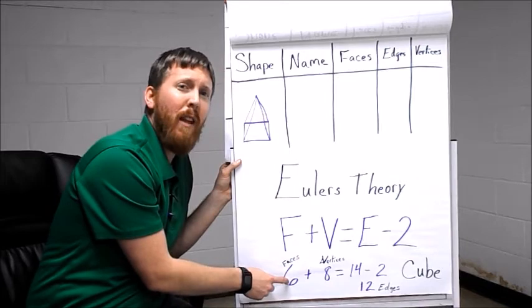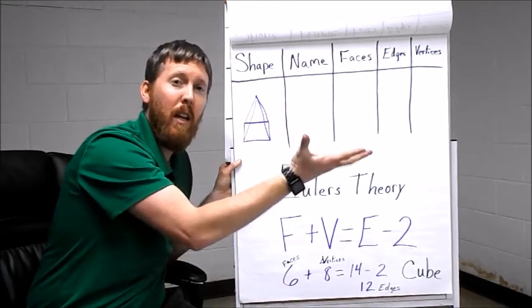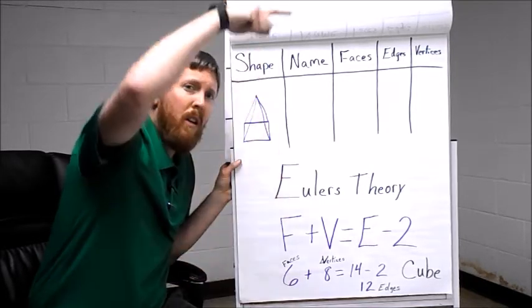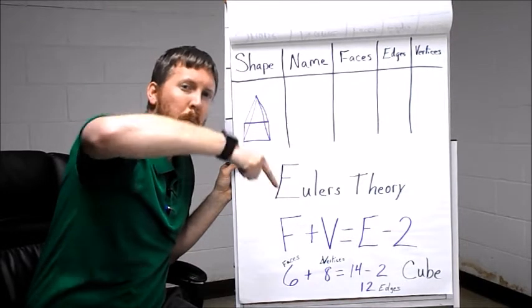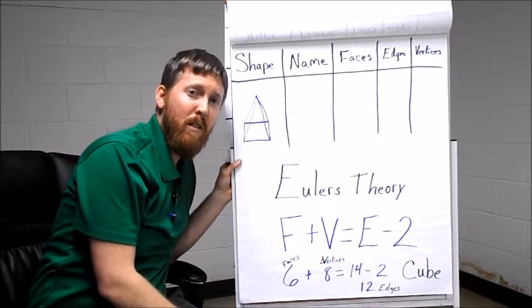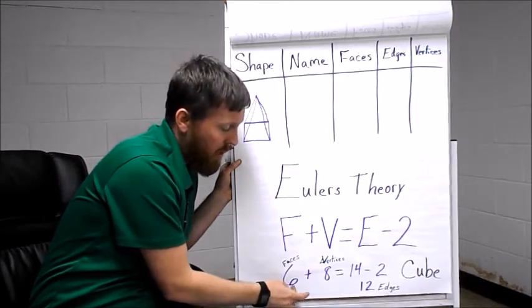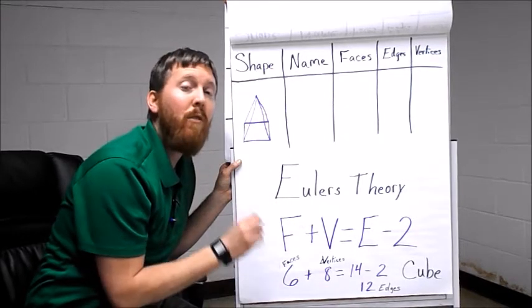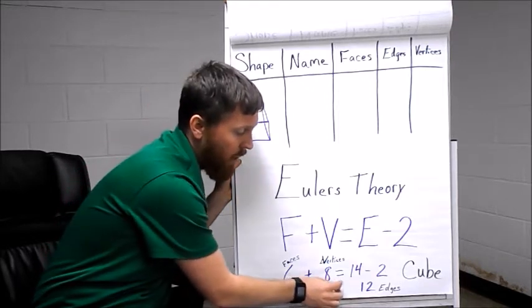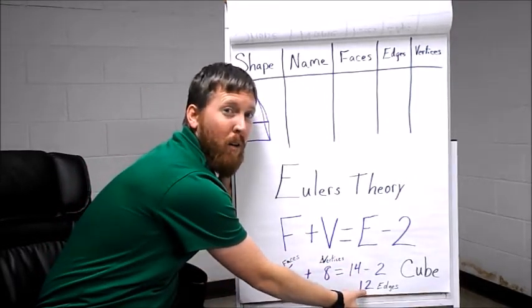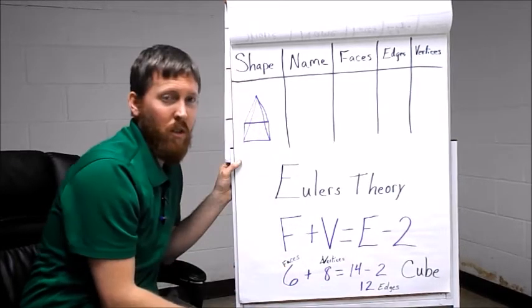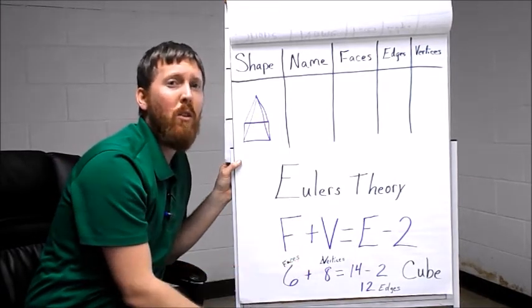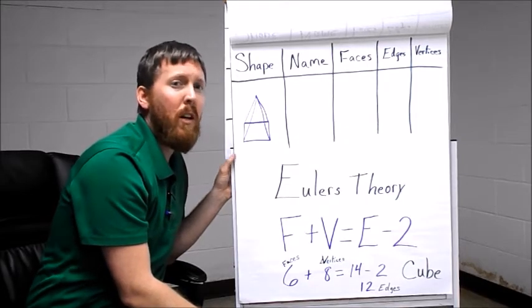For example, I used the cube's properties to show you the way I did this. A cube has six flat areas - those are called faces. Then you have four points up top and four points at the bottom, which are called vertices, that's eight. So I do 6 plus 8 and that equals 14. Now 14 is not the number of edges because I have to remember to subtract 2. So 14 minus 2 gets me my final property for edges which is 12. That is Euler's theory.